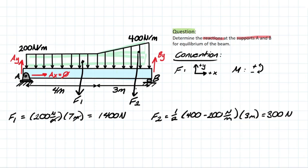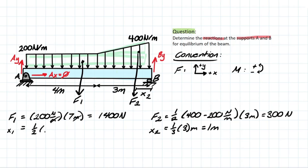We know the distance X2 is going to be one-third of the span it covers — one-third of 3 is 1 meter. And for the rectangular distribution, it's going to be half of the entire span: one-half of 7 meters, which is 4.5 meters.